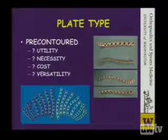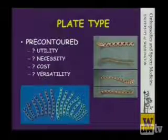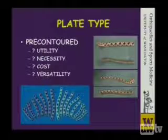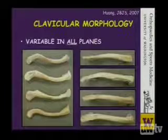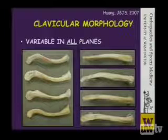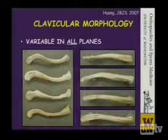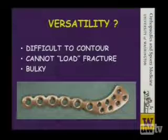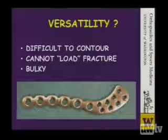There have been a rash of companies coming out with pre-contoured implants with locking components that can be placed superiorly or anteriorly. However, Jerry Wong wrote a nice article in JBJS demonstrating how variable the clavicle is in all planes — there's significant variety in the S-shaped curve, so it's very difficult to have one plate fit all shapes. Pre-contoured plates are very stiff and bulky, and their configuration does not allow you to dynamically load or compress these fractures.